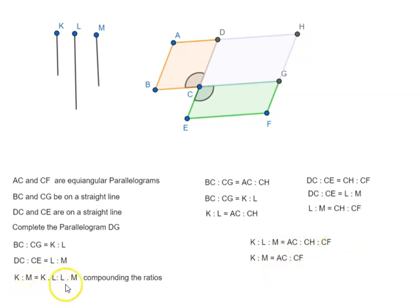But K is to M we have already seen is equal to K times L is to L times M.